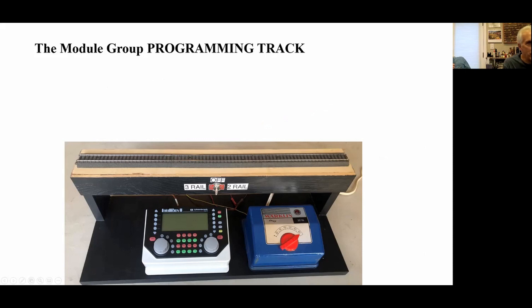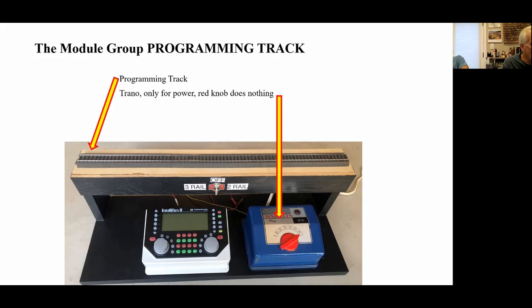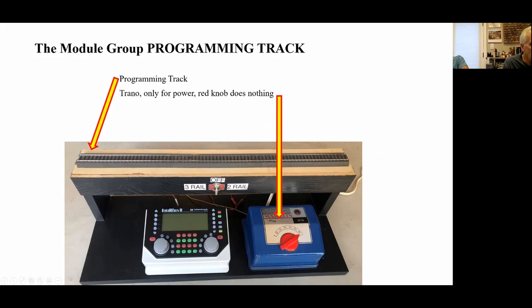This is something that AJ built. Very simple — this is the programming track. This is a Trano that provides the power for the IntelliBox. The red knob does absolutely nothing — it doesn't control the train or turn the juice up and down. We're simply taking the light output from this old Marklin transformer and using that to power this.